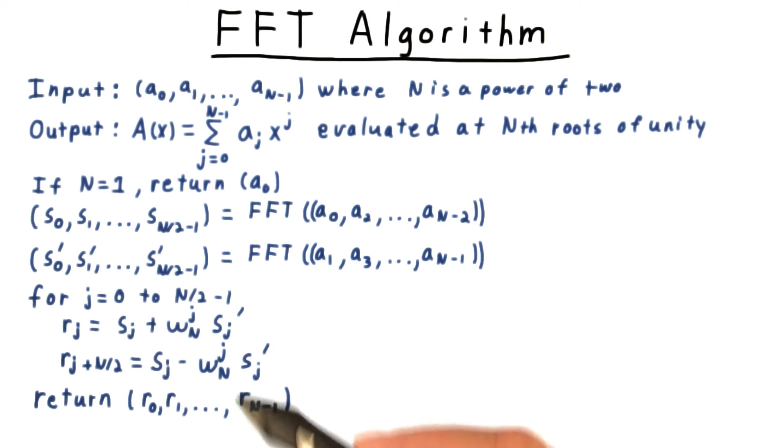Then we combine the results, taking care of paired values together. Notice the difference in the sign on the contribution from the odd powers, which became s prime.